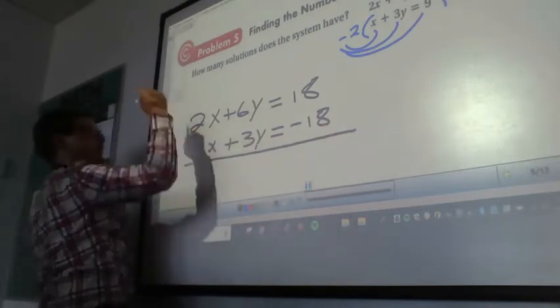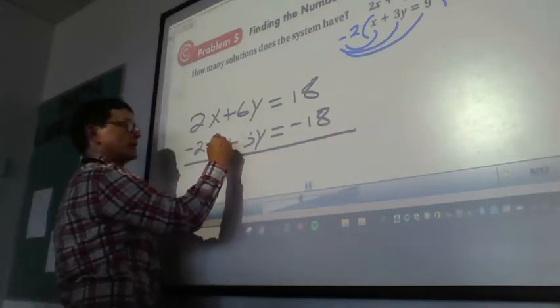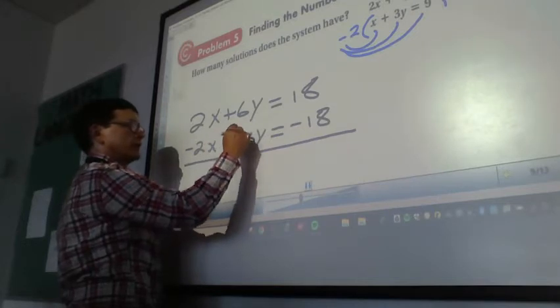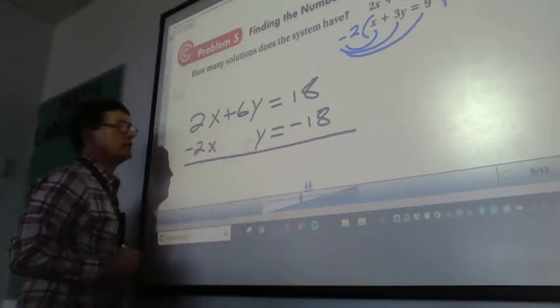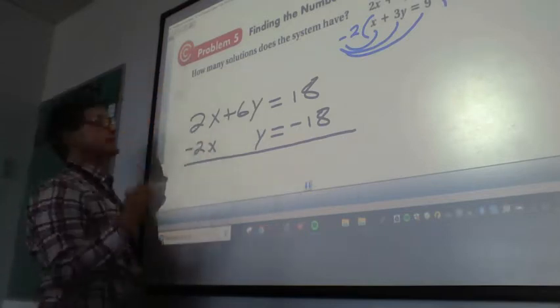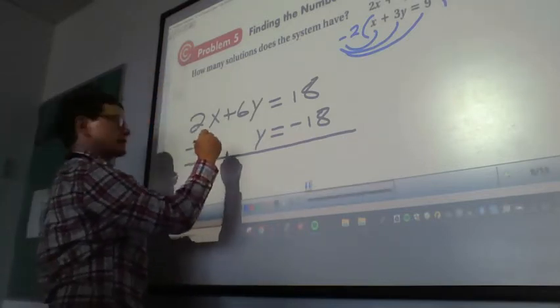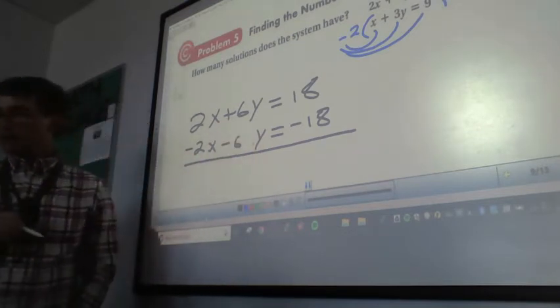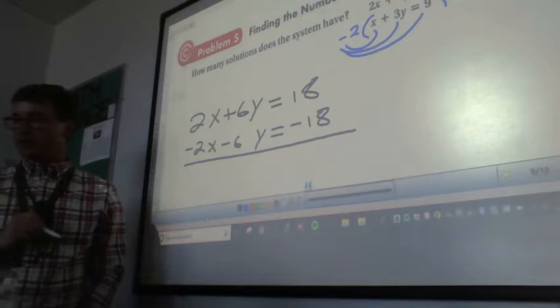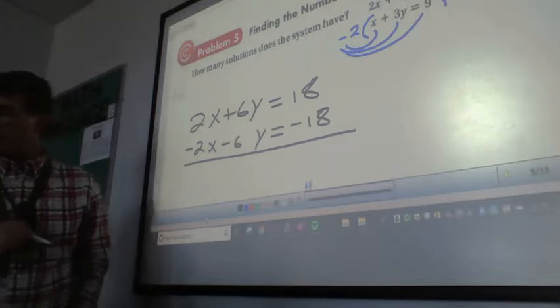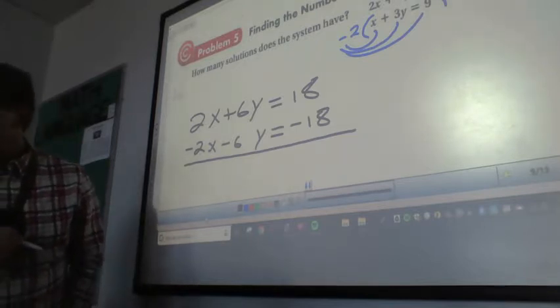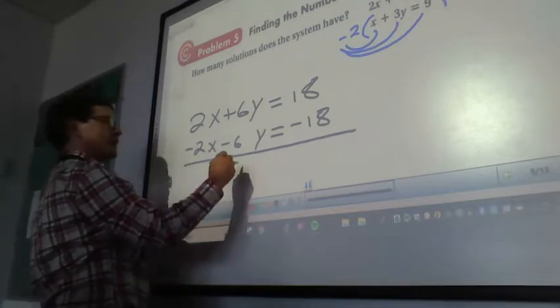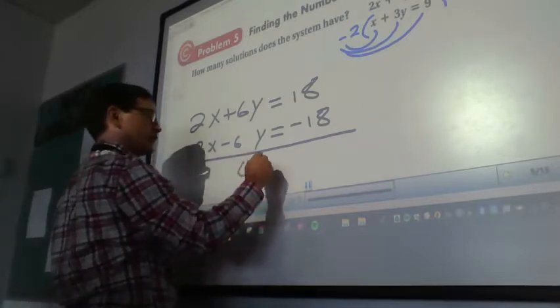I screwed the middle term up. It's doing a weird laggy thing. So negative 2 times positive 3 is negative 6y. So what happens, what do both sides equal? Show me with your hands. Combine like terms vertically. Zero. That's better.